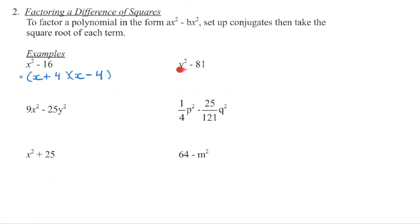For the second example, we don't have a greatest common factor, and we do have a difference of squares — those are two perfect squares. So we set up our conjugates, one is a plus and one is a minus. Square root y squared to get y, square root 81 to get 9. Checking: y squared, negative 9y plus 9y is 0y so that term disappears, and 9 times negative 9 is negative 81.